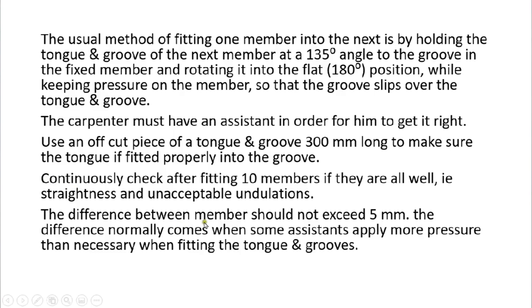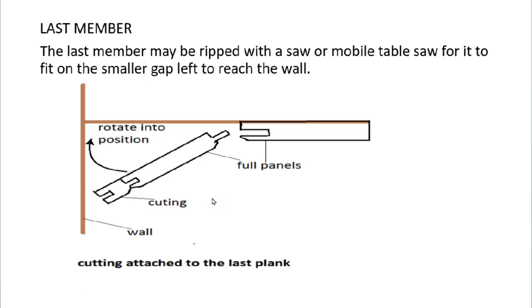The gap between members should not exceed 5 millimeters. This gap usually occurs when an assistant relaxes pressure during the process, causing the tongue and groove to pull out, so always pay attention. The last member may need to be ripped with a saw or mobile table saw to fit the smaller gap left near the wall, then forced into position using the rotating method and nailed to the bottom cord.